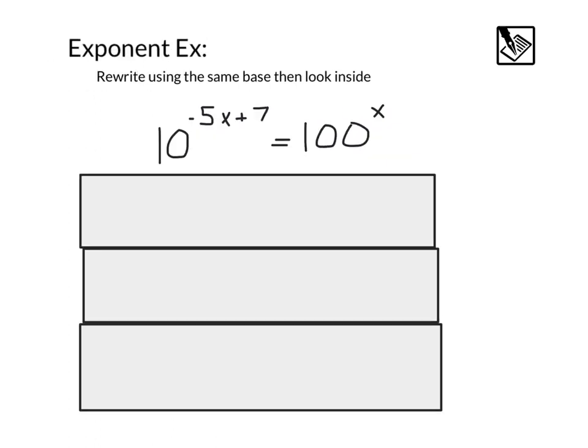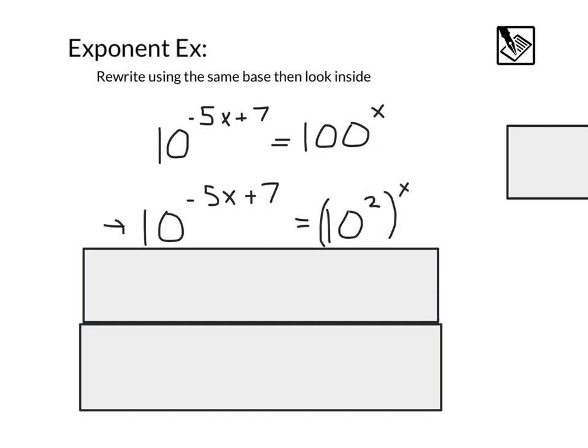Our final example is going to cover exponents. Here we actually want to rewrite using the same base. And then we can compare the exponents to set up an equation. We've got 10 to the negative 5x plus 7 equals 100 to the x. Notice, I notice that 100 can be written as 10 squared.